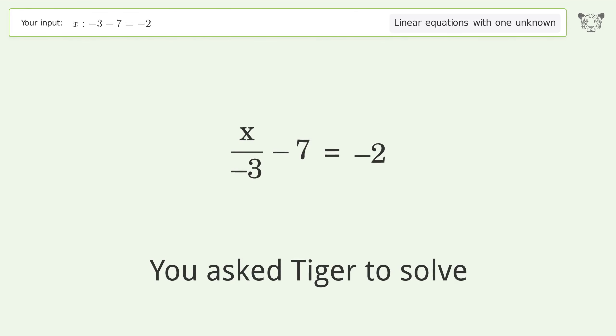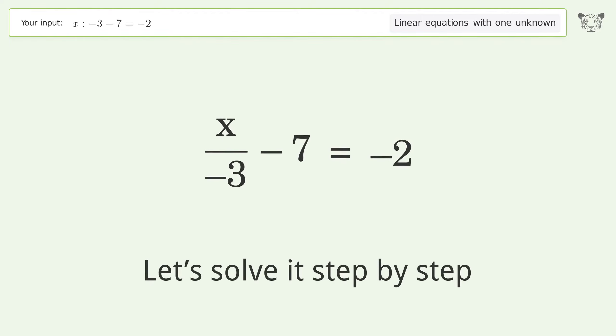You asked Tiger to solve this. It deals with linear equations with one unknown. The final result is x equals negative 15. Let's solve it step by step.